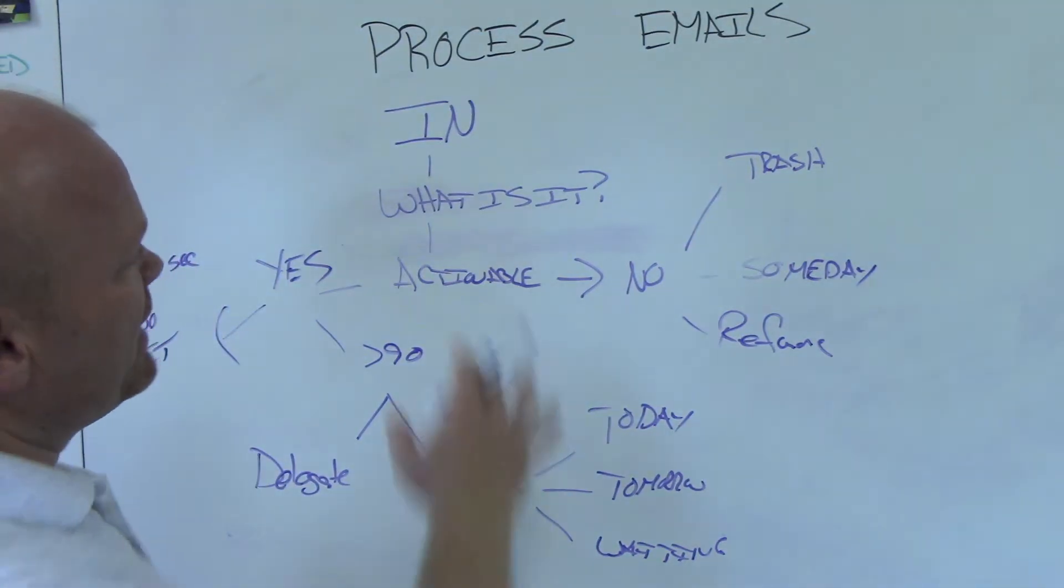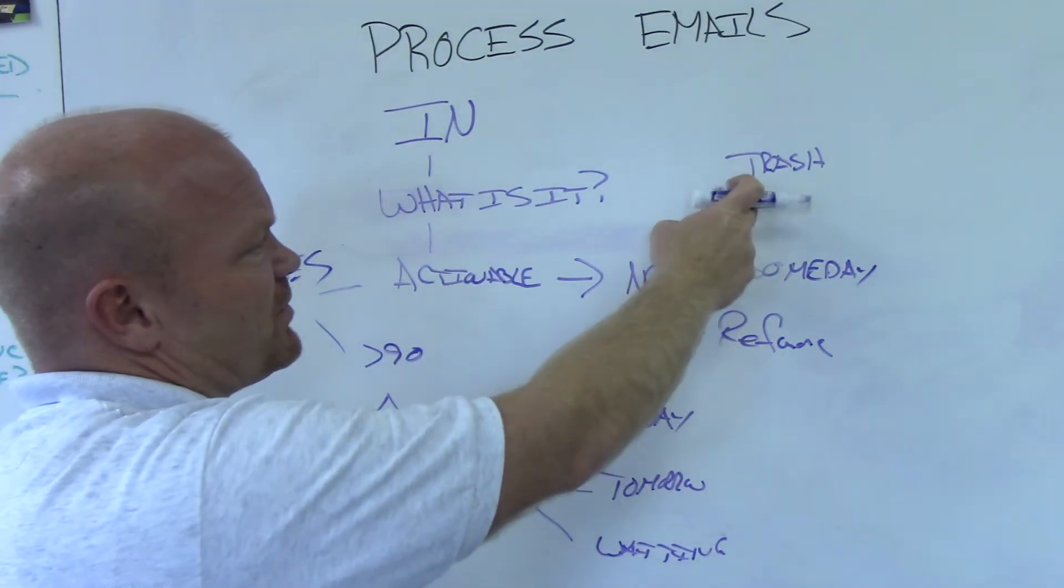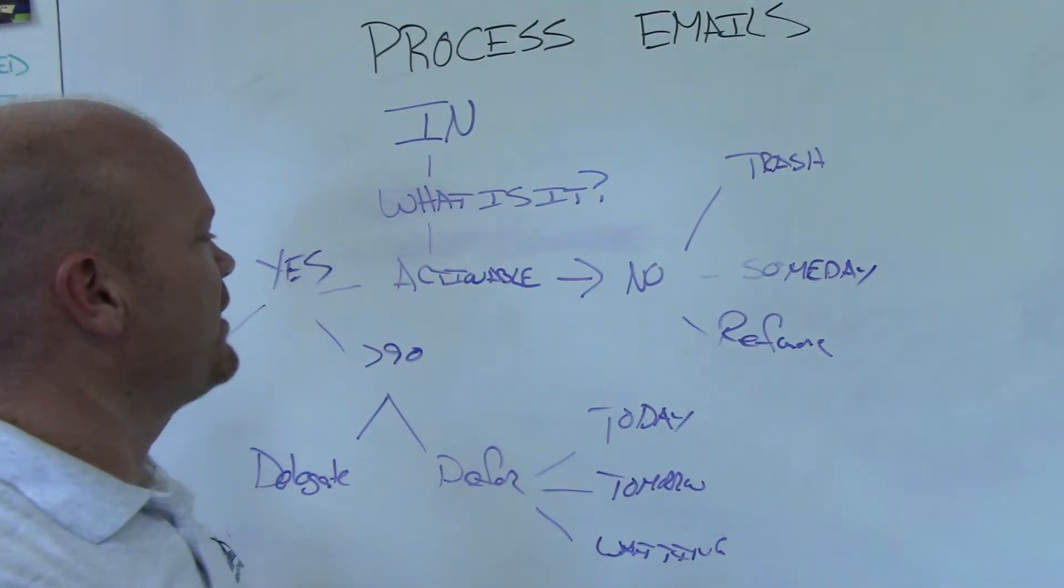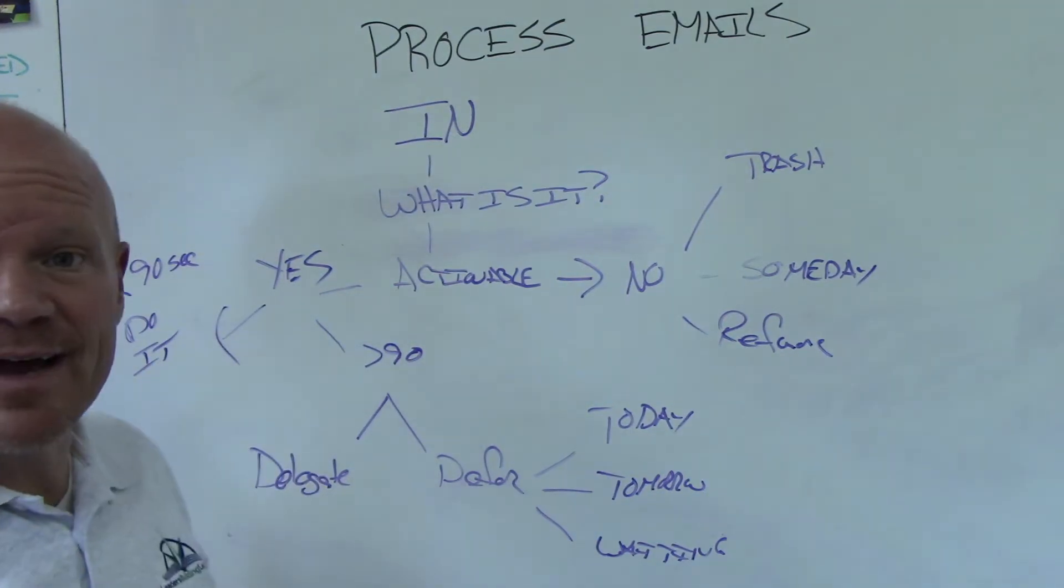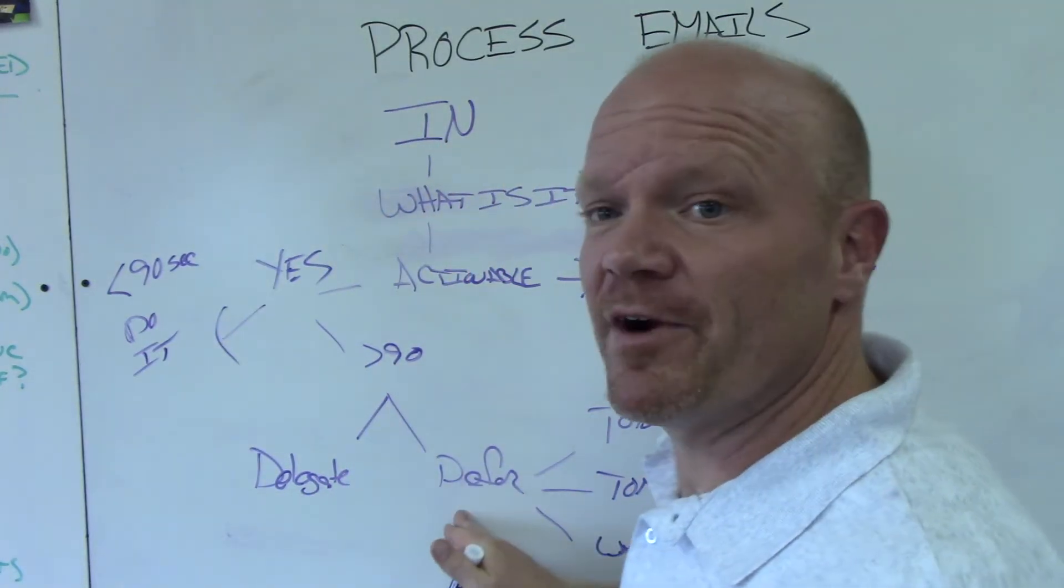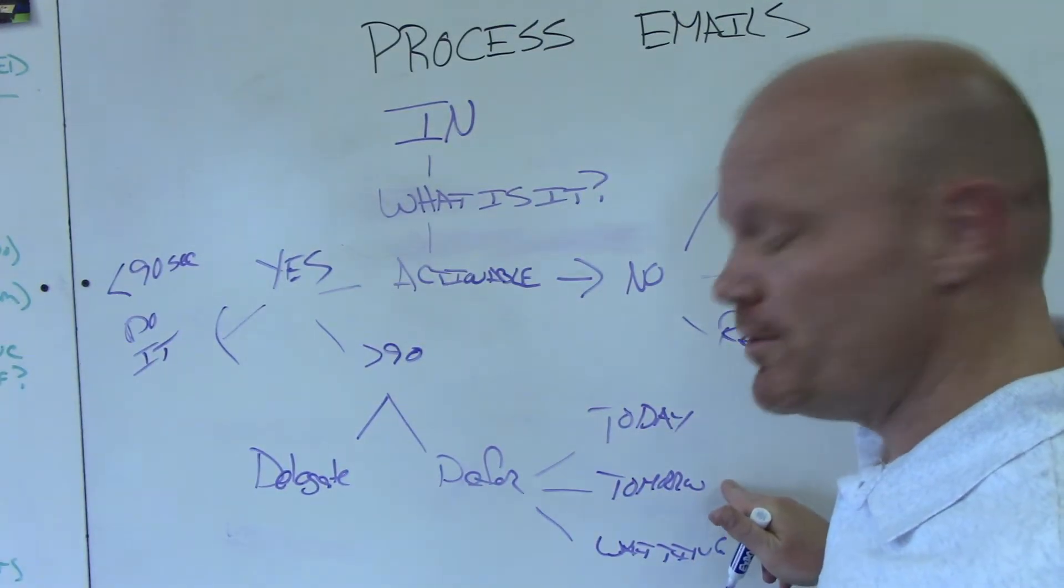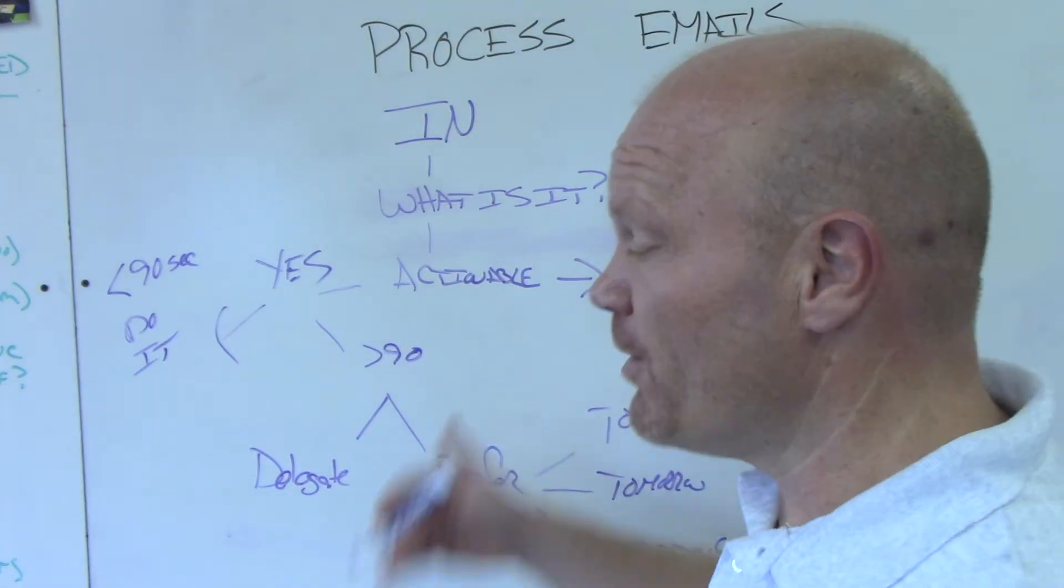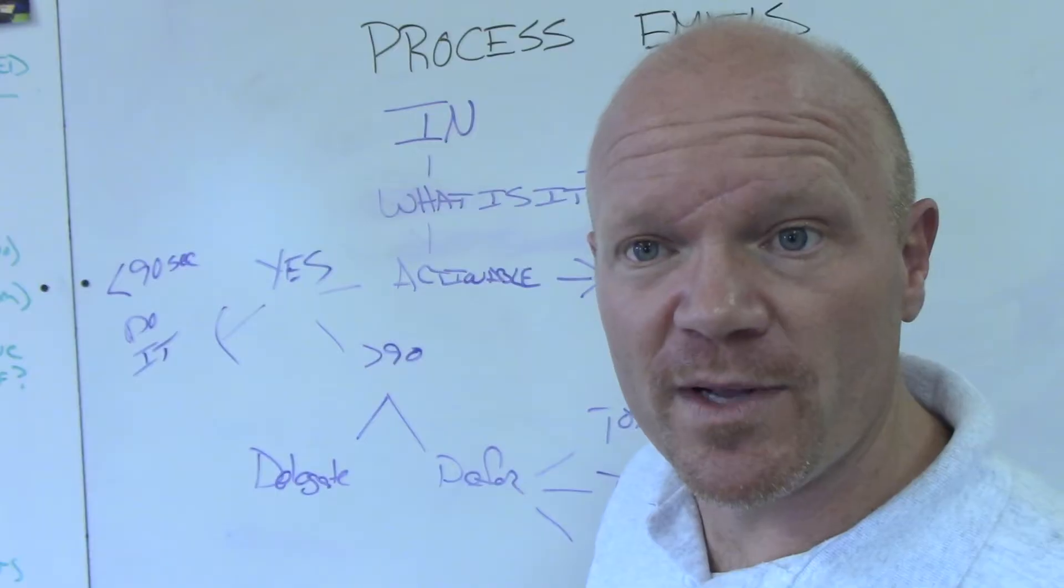So let's just go through that process again. The email comes in. What is it? Is it actionable? No. Then it either goes in the trash, into my someday folder, or maybe a reference folder. Yes, actionable. Can I do it in less than 90 seconds? If that's the case, then I get it done right there. If no, if it takes more than 90 seconds, I've got to defer it to another time. I'm going to either defer it to later today, to tomorrow, or to my waiting list. Now, if it's later today and you scheduled 45 minutes and you're already through and you've got 15 minutes left, open up your today folder and get started on those emails.